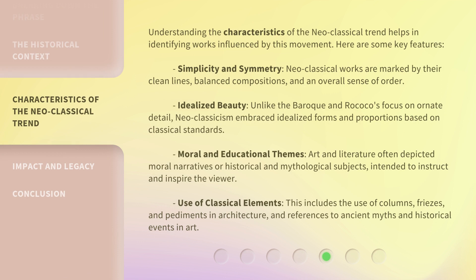Understanding the characteristics of the Neoclassical Trend helps in identifying works influenced by this movement. Here are some key features. Simplicity and Symmetry: Neoclassical works are marked by their clean lines, balanced compositions, and an overall sense of order. Idealized Beauty: unlike the Baroque and Rococo's focus on ornate detail, Neoclassicism embraced idealized forms and proportions based on classical standards. Moral and Educational Themes: art and literature often depicted moral narratives or historical and mythological subjects, intended to instruct and inspire the viewer. Use of Classical Elements: this includes the use of columns, friezes, and pediments in architecture, and references to ancient myths and historical events in art.